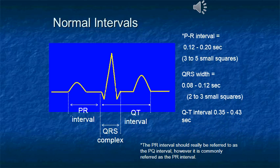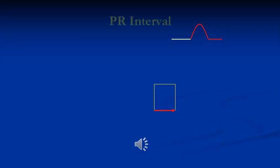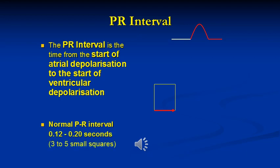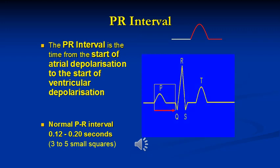ECG intervals and their normal durations in seconds. The box on this slide shows the PR interval, which is the time from the beginning of atrial depolarization to the start of ventricular depolarization. Its normal value is also shown on the slide.